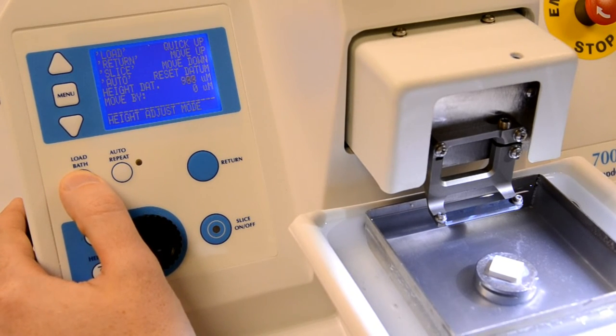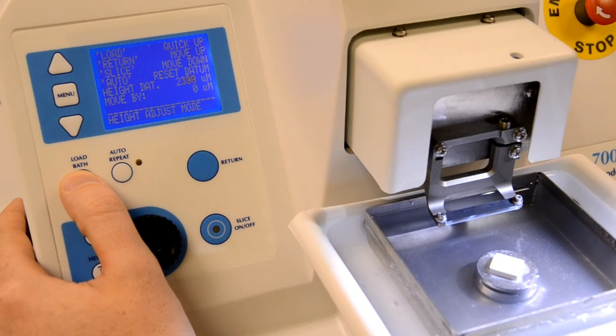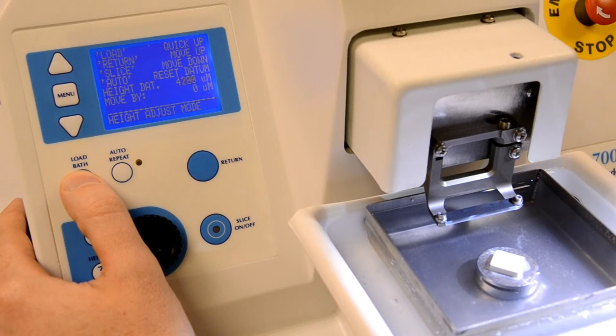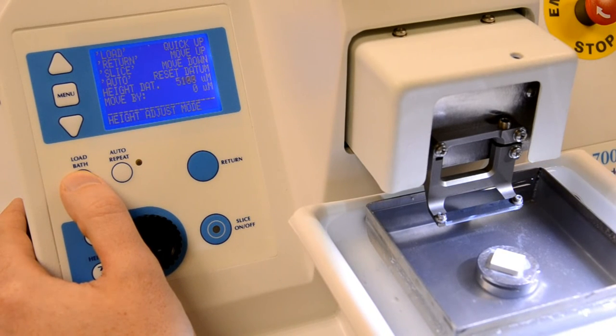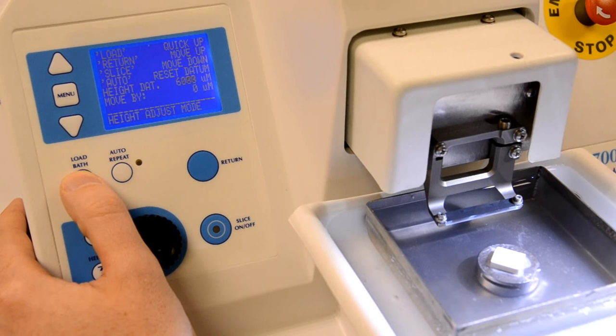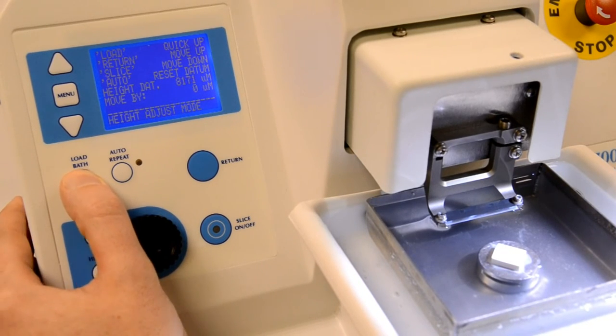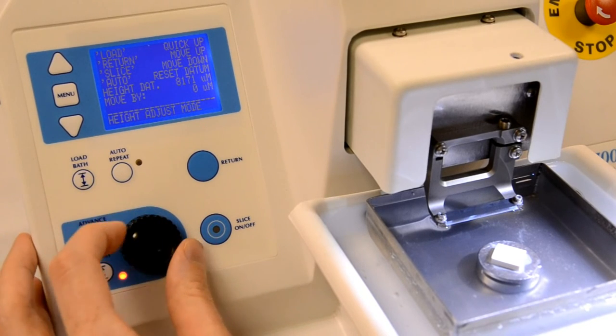Next we need to bring the specimen to a suitable start height by entering the height adjustment mode. To do this, press the height key. Press the load bath key and the bath will begin to rise. Press the load bath key again to stop it.